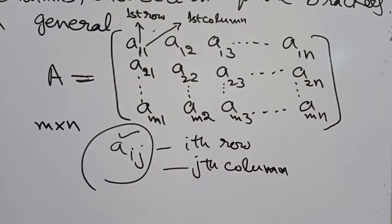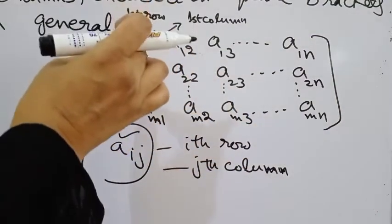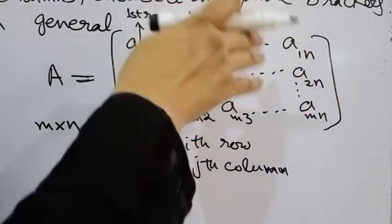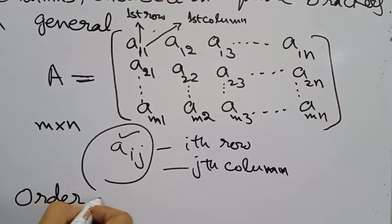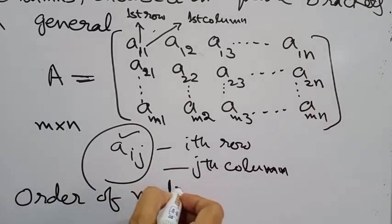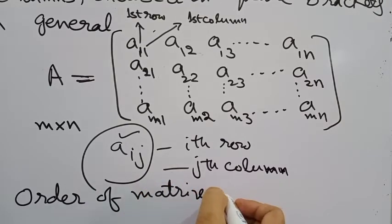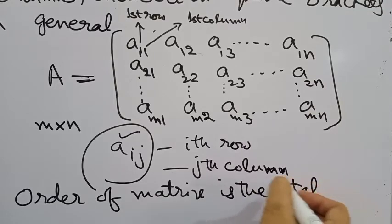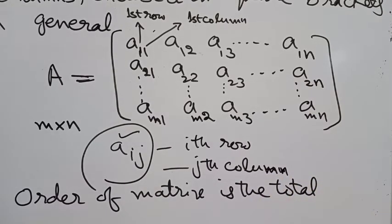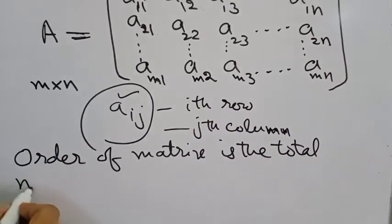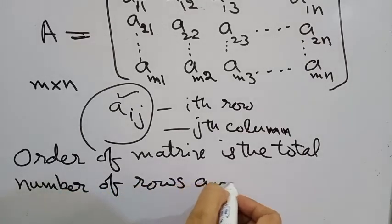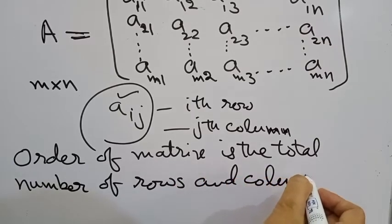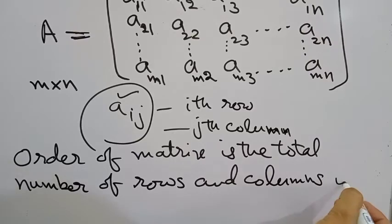The total number of rows and columns in a matrix denote the order of the matrix. So, we say that order of matrix is the total number of rows and columns in that matrix.